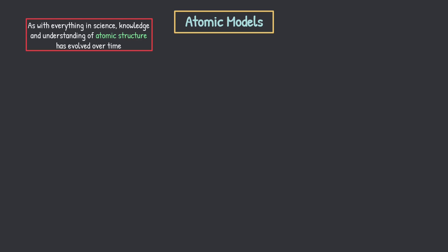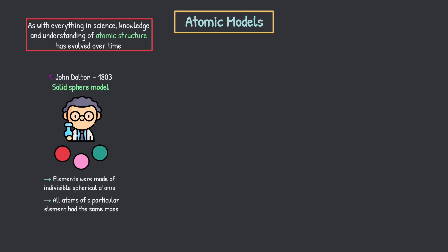So as with everything in science, knowledge and understanding of atomic structure has evolved over time. So I'm going to run through a quick timeline in terms of how the atom and the model of the atom has developed over time. So you don't need to know an insane amount of detail, just the key points. So first off we had John Dalton in 1803 and he developed something called the solid sphere model. You may see it called something else, but you honestly don't even really need to know about this. This should be GCSE stuff. And this is where elements were made of indivisible spherical atoms, and all atoms of a particular element had the same mass. So hydrogen had a mass of one, for example. They were indivisible. They were just spheres of atoms. They didn't really have a clue what was going on at this point.